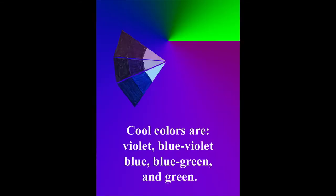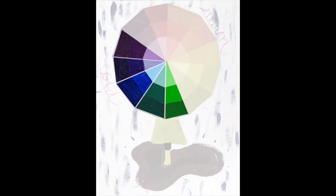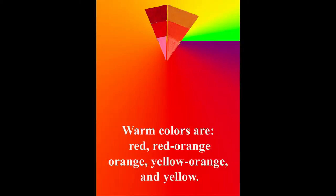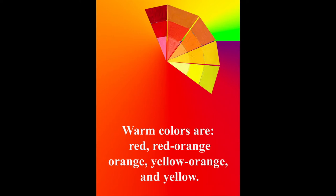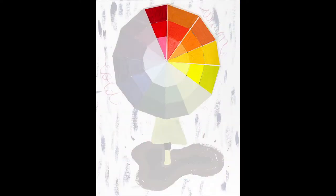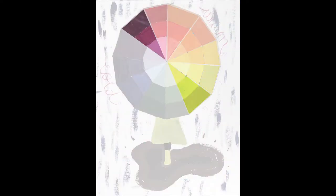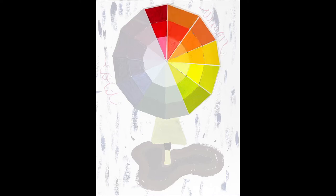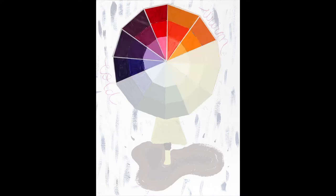The cool colors are violet, blue-violet, blue, blue-green, and green. The warm colors are red, red-orange, orange, yellow-orange, and yellow. Yellow-green and red-violet can either be warm or cool depending upon how they're mixed. You can make a pleasing painting by using any half of the color wheel.